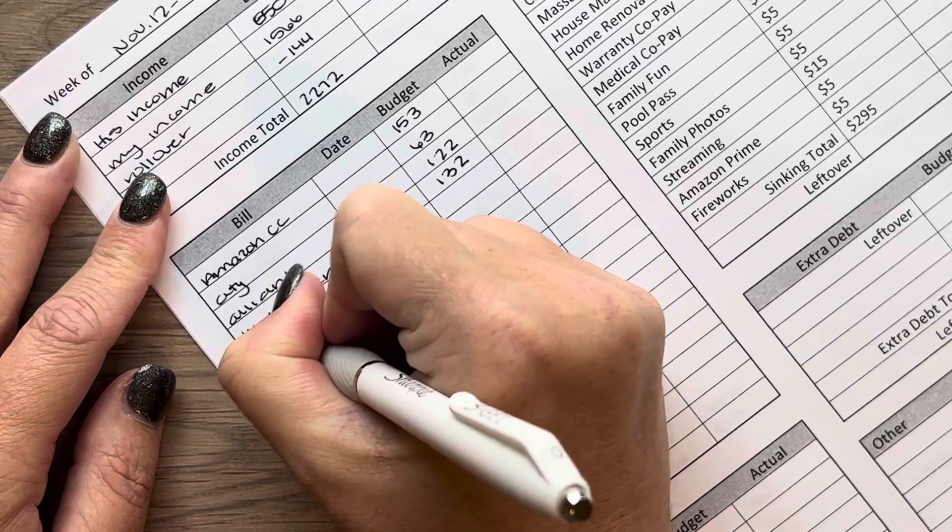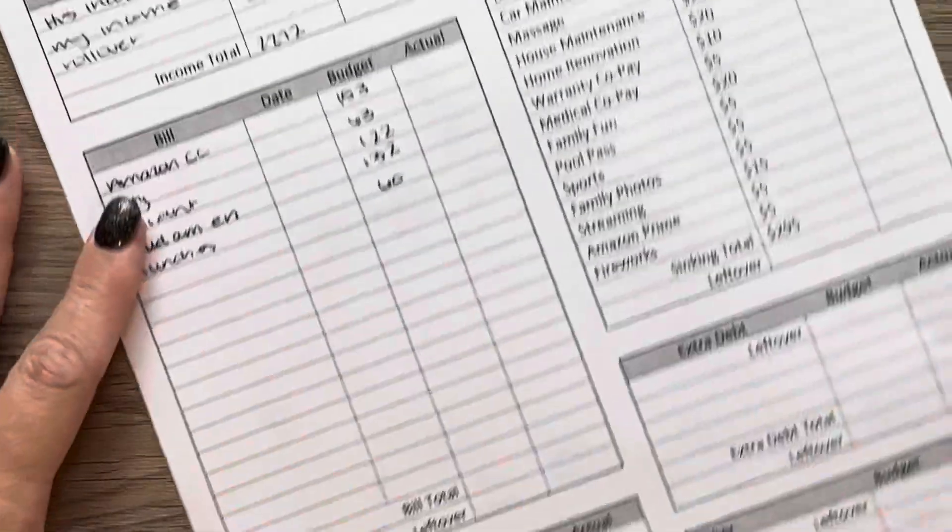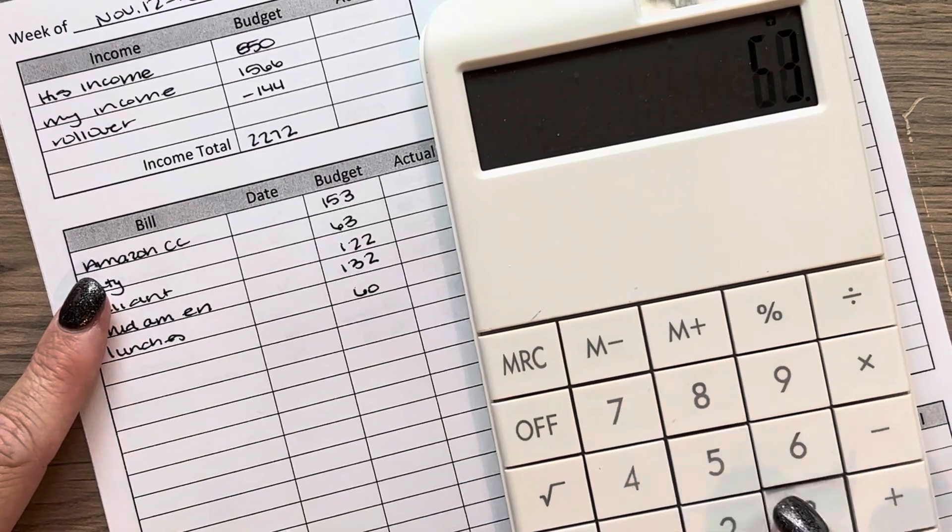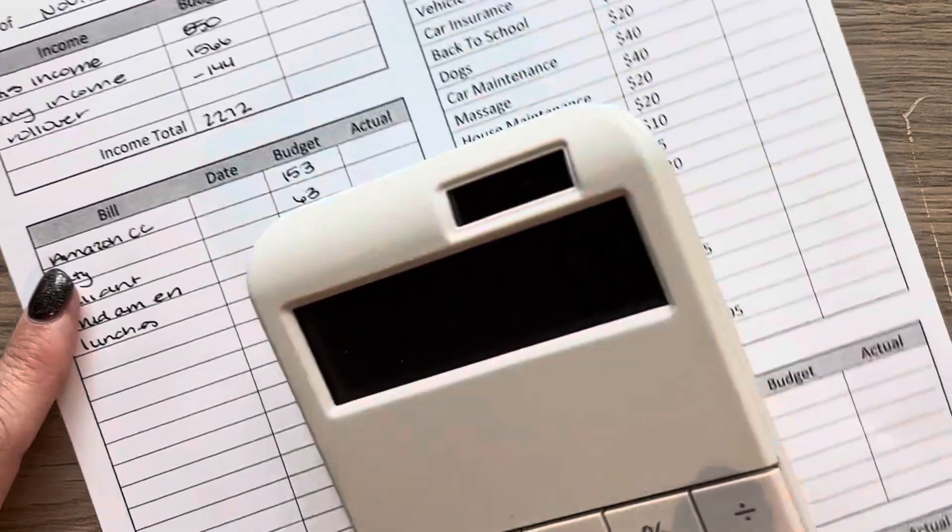And then Mid American Energy is our electrical company. And that is $132. And then school lunches is $60. So we'll add those values up, which comes to $530.